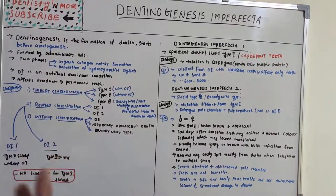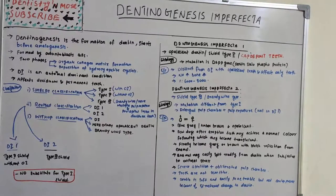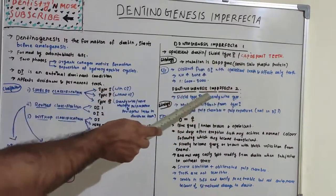The first part describes the color change — on eruption the tooth has a normal color, then it shifts to a bluish opalescent tone. Enamel chips off easily under occlusal stress, causing severe attrition, and the pulp chamber becomes obliterated. Teeth are not very sensitive, and dentin is soft and easily penetrable, yet caries incidence is very low due to the structural changes in dentin.